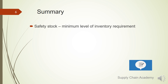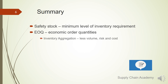In summary for today's lesson: safety stock is a minimum level of stock required for companies to ensure business continuity and a desirable level of supply. EOQ — Economic Order Quantity — identifies economically beneficial order quantities whenever demand is predictable and known. The inventory aggregation method considers consolidation of inventory to achieve less volume, risk, and costs.